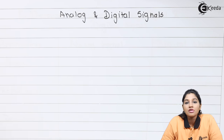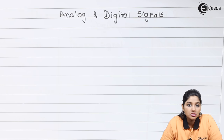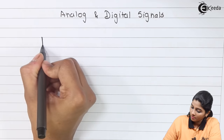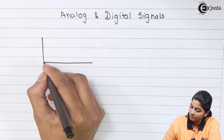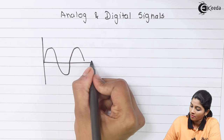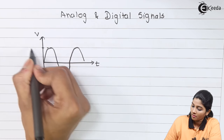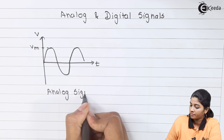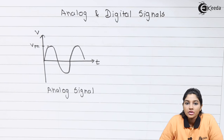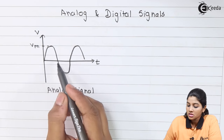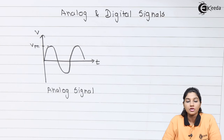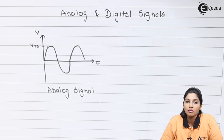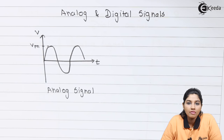The amplitude of these signals may have any value at any instant of time. We can represent that system by using a sine wave. From the diagram, we can see that the amplitude of the signal varies continuously with time — it is not fixed at any certain point.